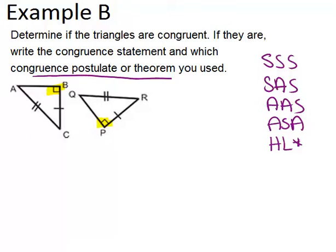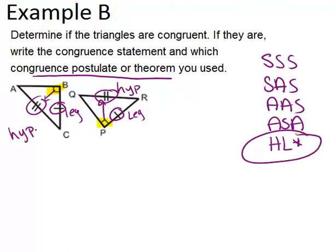We also know that one pair of sides is congruent, and those are each legs. And we also know that another pair of sides are congruent, and in this case, those are each hypotenuses. So because we have two legs and two hypotenuses that are congruent, and they're right triangles, you would use the HL congruence theorem.